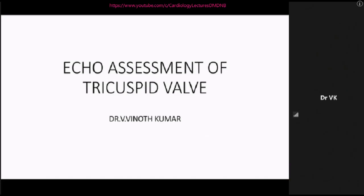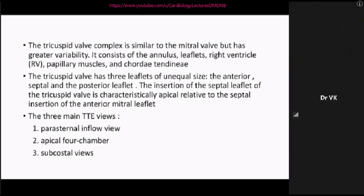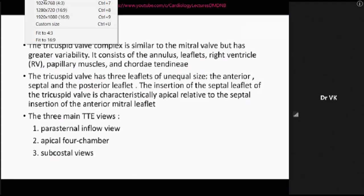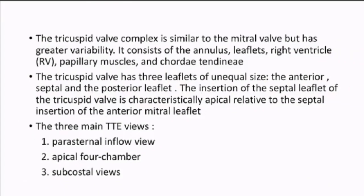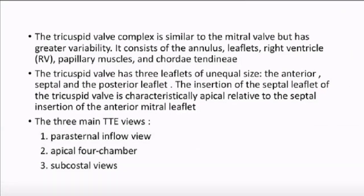Good morning to all of you. Today we are going to discuss about echo assessment of the tricuspid valve. The tricuspid valve complex is similar to the mitral valve complex but has greater variability. It consists of the annulus, leaflets, right ventricle, papillary muscles, and chordae tendineae. The tricuspid valve has three leaflets of unequal size: the anterior, septal, and posterior leaflets. The three main echo views important in assessing the tricuspid valve are the parasternal inflow view, apical four-chamber view, and subcostal view.